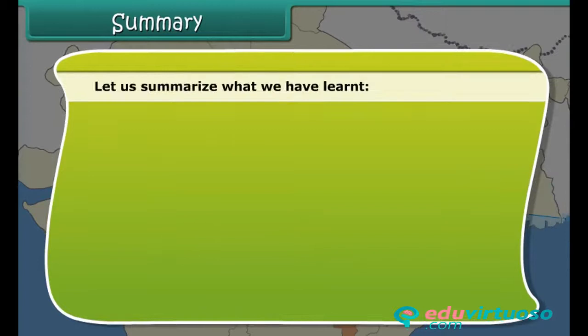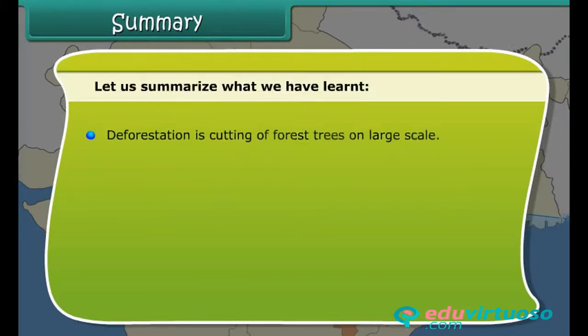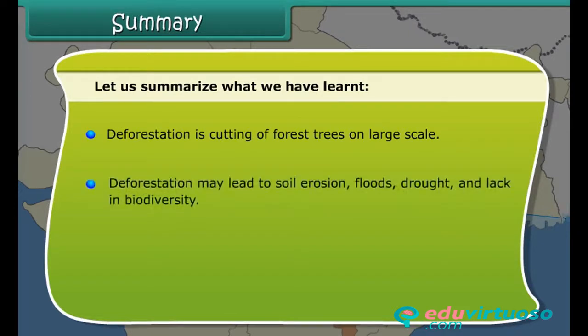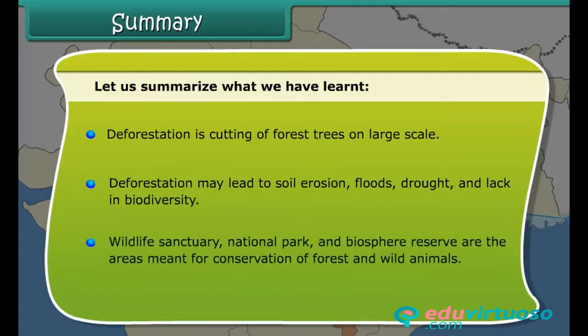Let us summarize what we have learned. Deforestation is cutting of forest trees on a large scale. Deforestation may lead to soil erosion, floods, drought and lack of biodiversity. Wildlife Sanctuary, National Park and Biosphere Reserve are the areas meant for conservation of forests and wild animals.